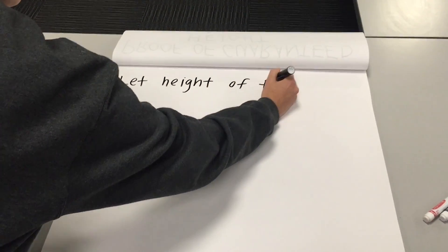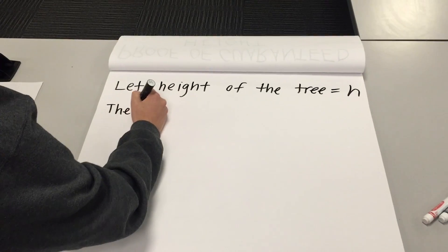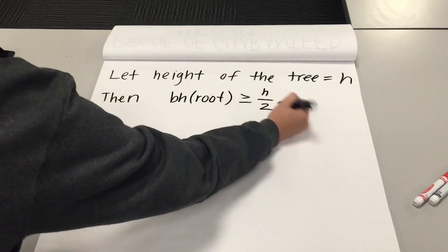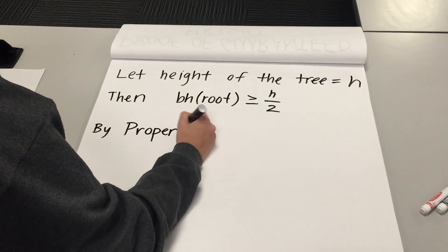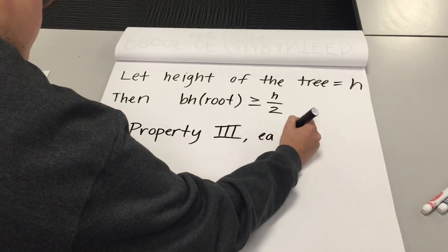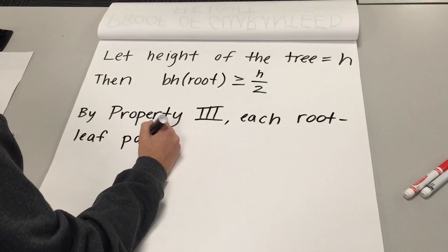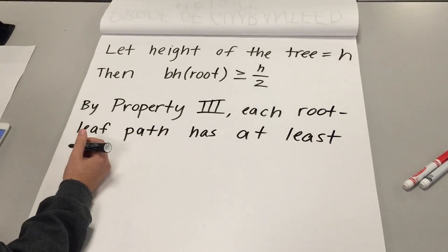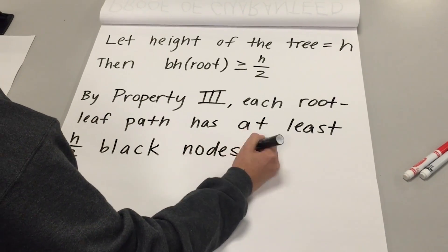Now we define the height of the tree to be equal to h. We know from properties of a red-black tree that the black height of the root will be greater than or equal to the height divided by 2. By property 3, we know that there cannot be 2 reds in a row; therefore, every red node must have black children. Because of our property written above, the path will have at least h/2 black nodes.